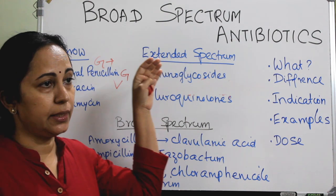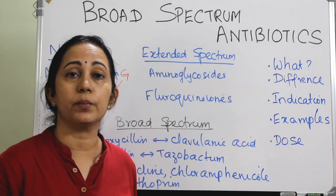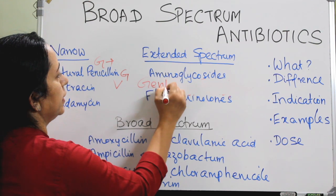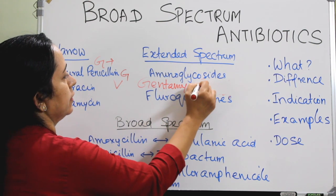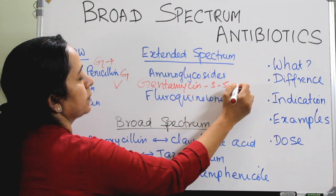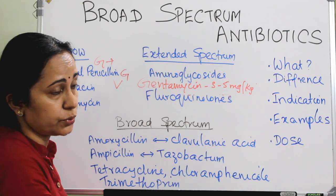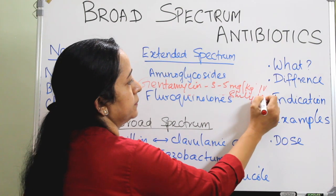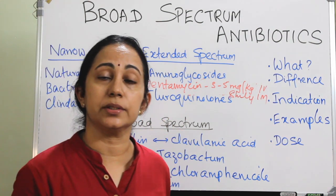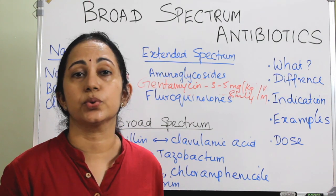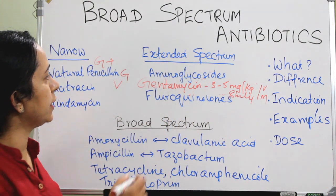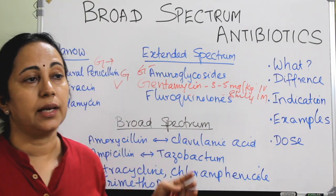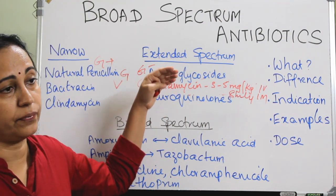The extended spectrum antibiotics mainly include aminoglycosides and fluoroquinolones. Of the aminoglycosides, the commonly used one in ENT is gentamicin, given in a conventional dose of 3 to 5 mg per kg body weight in divided doses at 8-hour intervals, given IV or IM. Gentamicin can cause ototoxicity, nephrotoxicity, and also neuromuscular junction blockade. It is mainly active against gram negative organisms. Other aminoglycosides include minocycline and kanamycin.